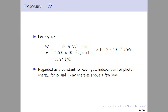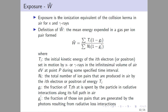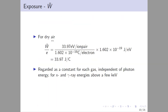For dry air, comparing the mean energy with the electron, the ionization energy is approximately 33.97 joule per coulomb. This means one electron can produce this many ion pairs. W-bar is regarded as a constant for each gas, independent of photon energy for X and gamma ray energies above a few kiloelectron volts. So for different gases such as hydrogen or oxygen, the ionization value may be the same constant.